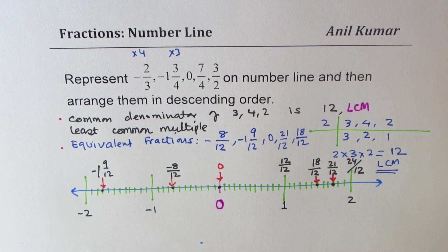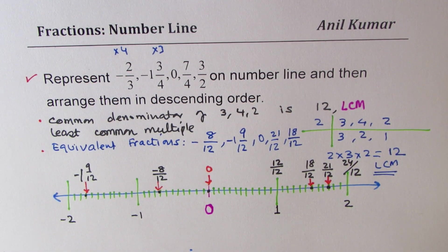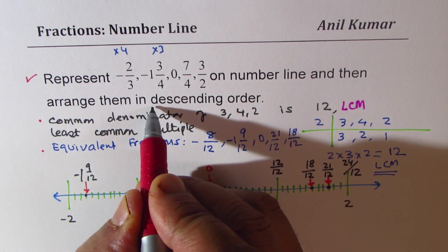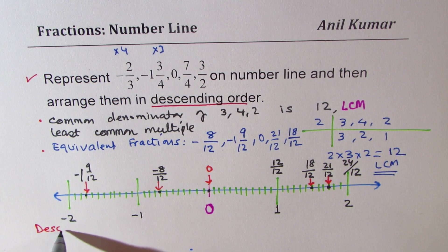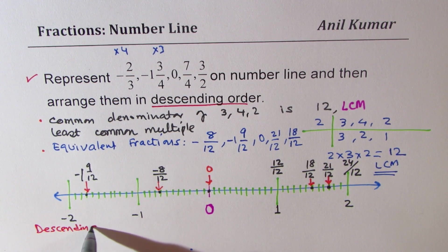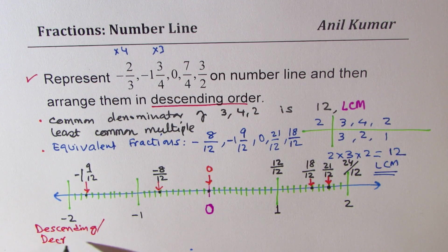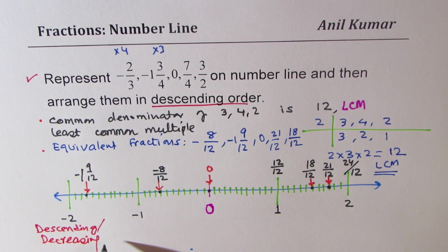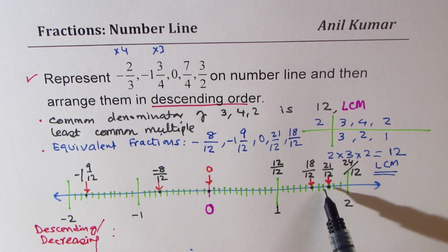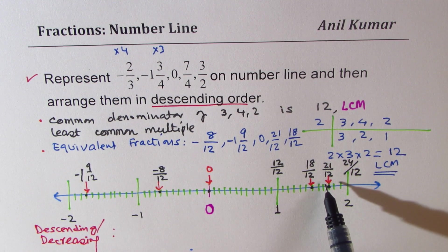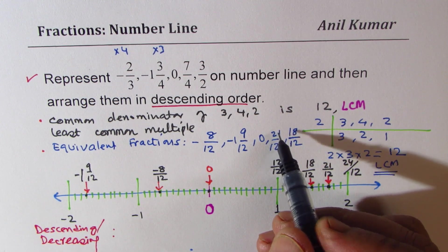So now we can arrange them in descending order once we have placed them all. So I hope the first step is clear where we have arranged all the numbers on number line. Now let us arrange them in descending order. Descending means decreasing.